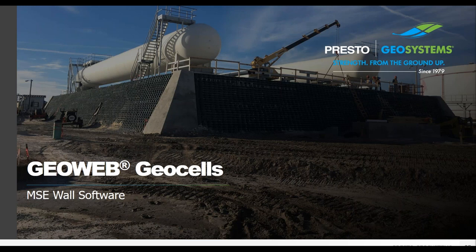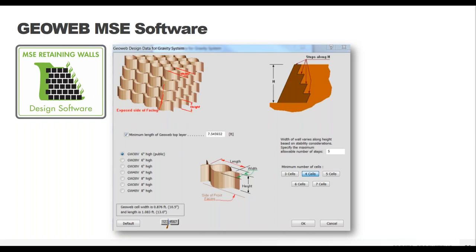Now we're going to get into the GeoWeb MSC wall software. Presto Geosystems offers free software for designing GeoWeb retaining walls available on our website. It can be used by engineers, designers, and architects to help determine if a GeoWeb system is appropriate for a project. The GeoWeb MSC wall software was written by Professor Dov Leshinsky at the Adama Engineering Group and can be thought of as an extension of the popular ReSSA software. You don't have to have ReSSA installed to use our program, but it gives you an idea of how the software is structured.